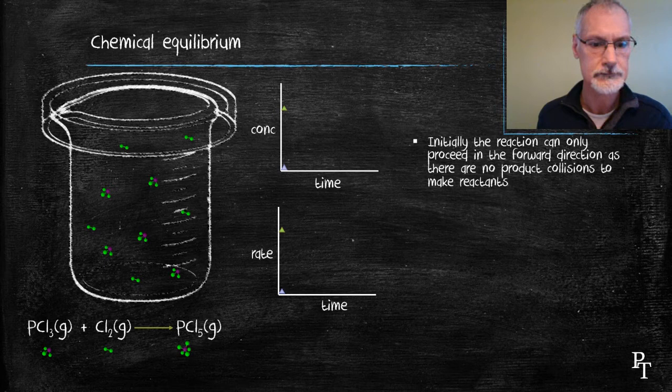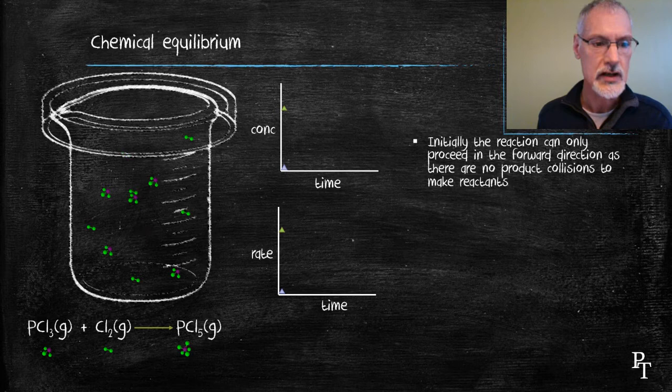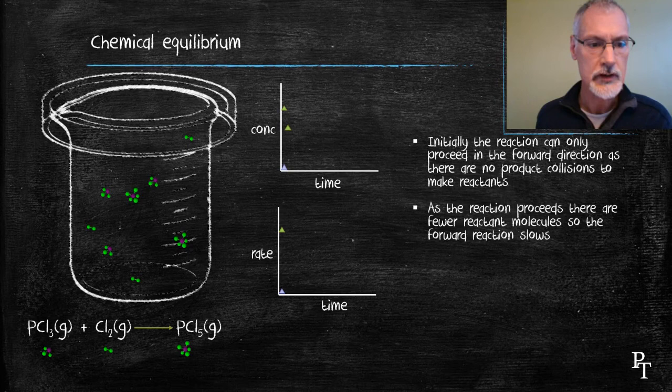As the reaction proceeds and I start to make product, the concentrations of the reactants will begin to drop. That drop in concentration then results in a slowing down of the forward reaction.